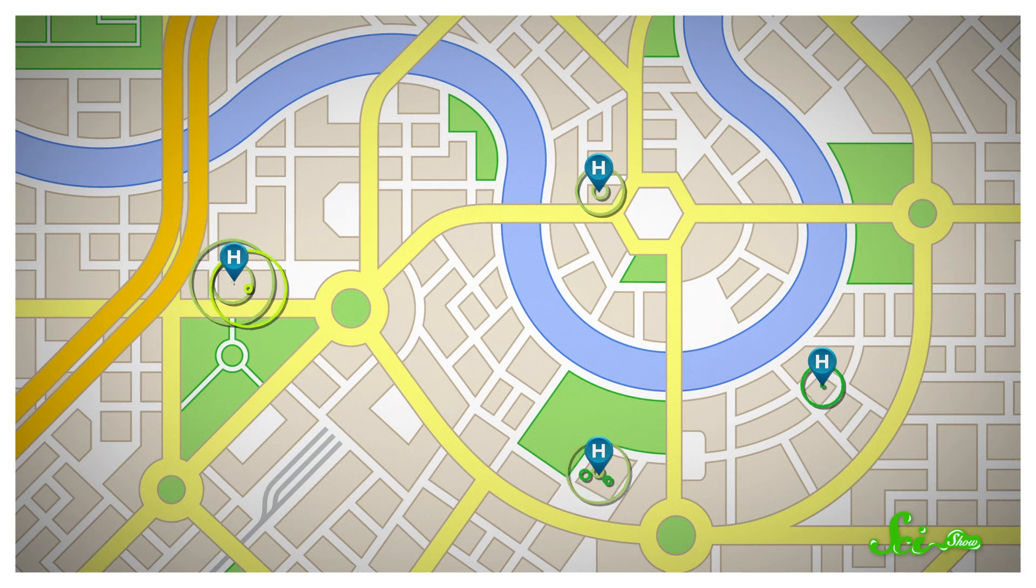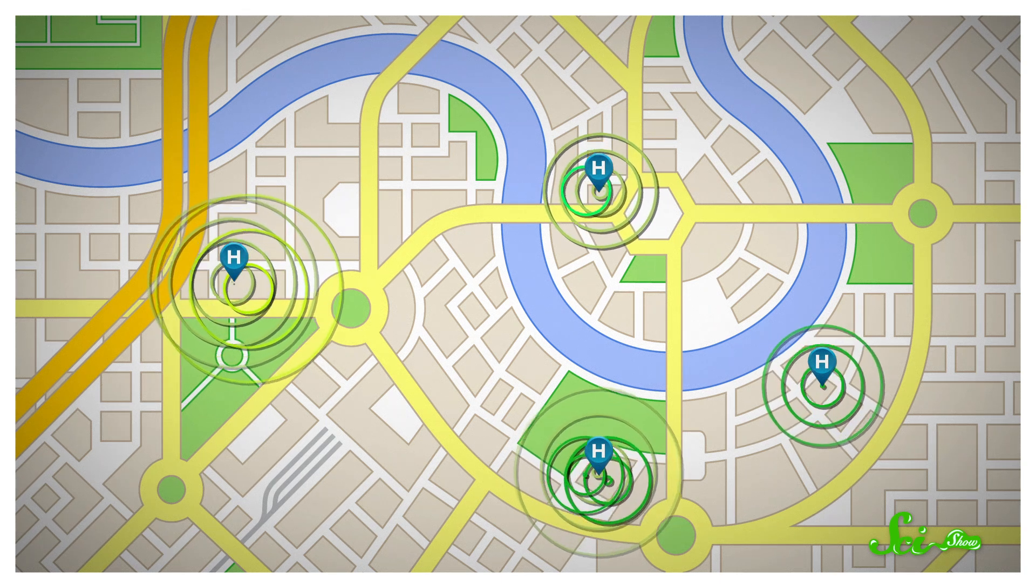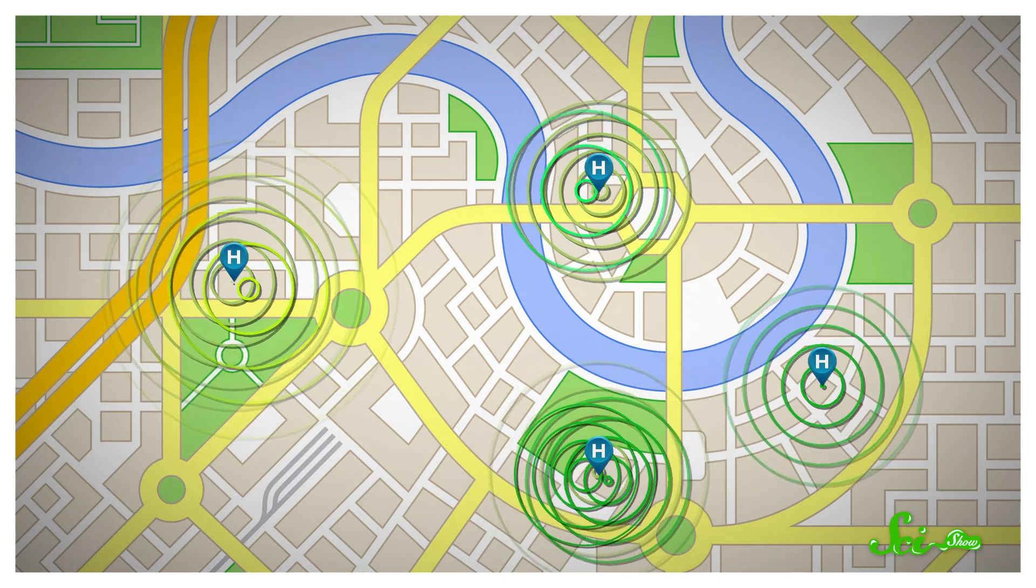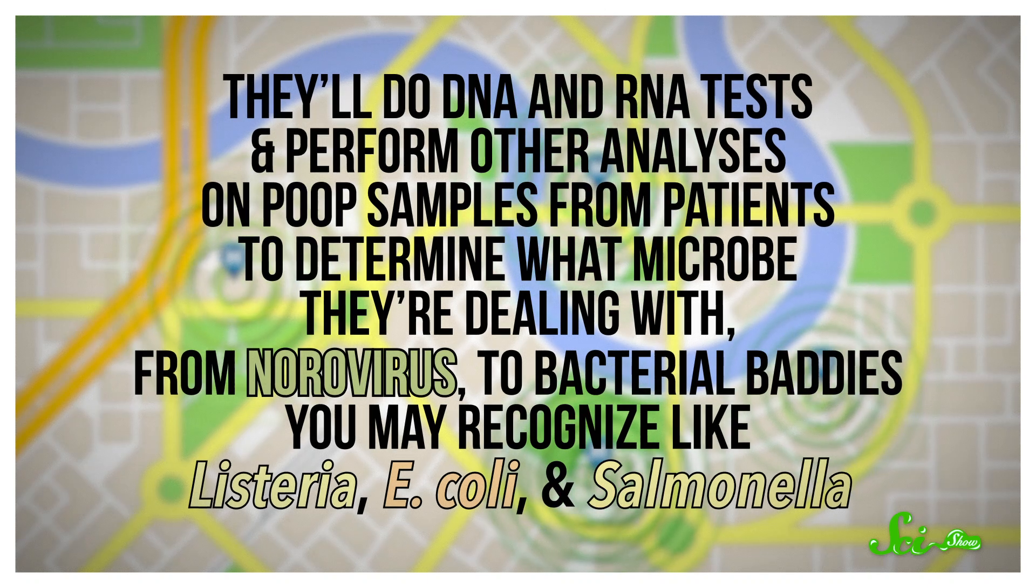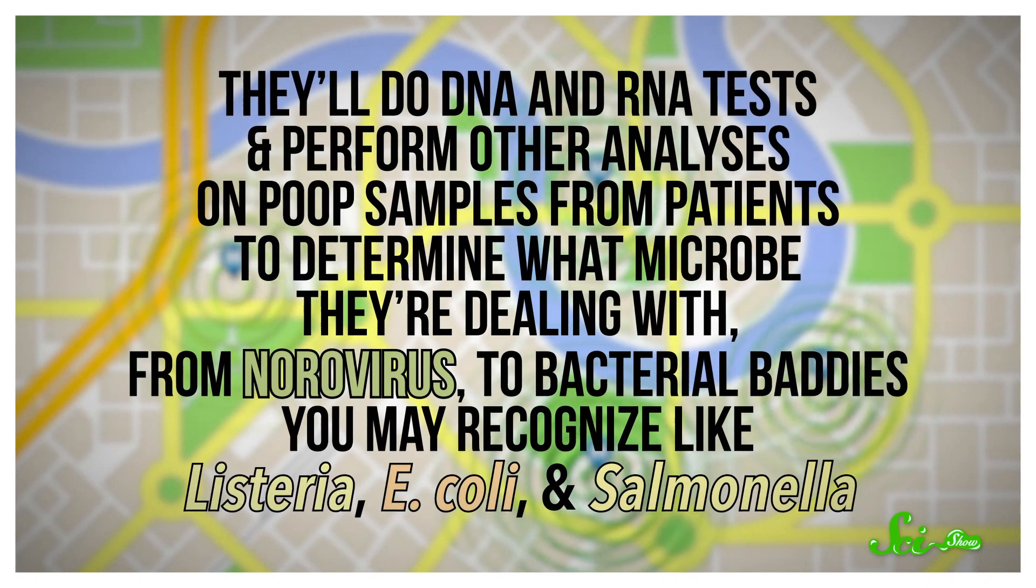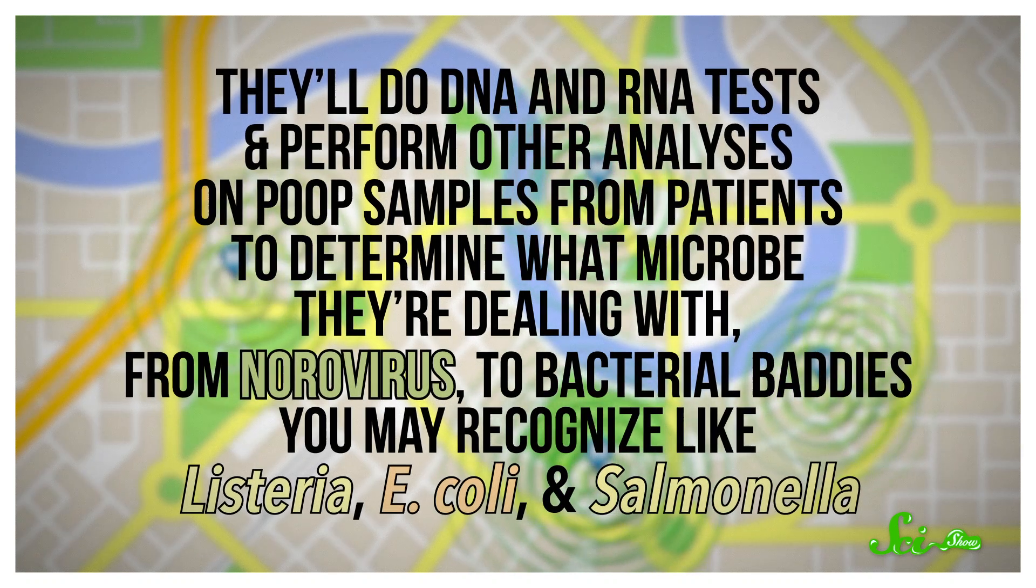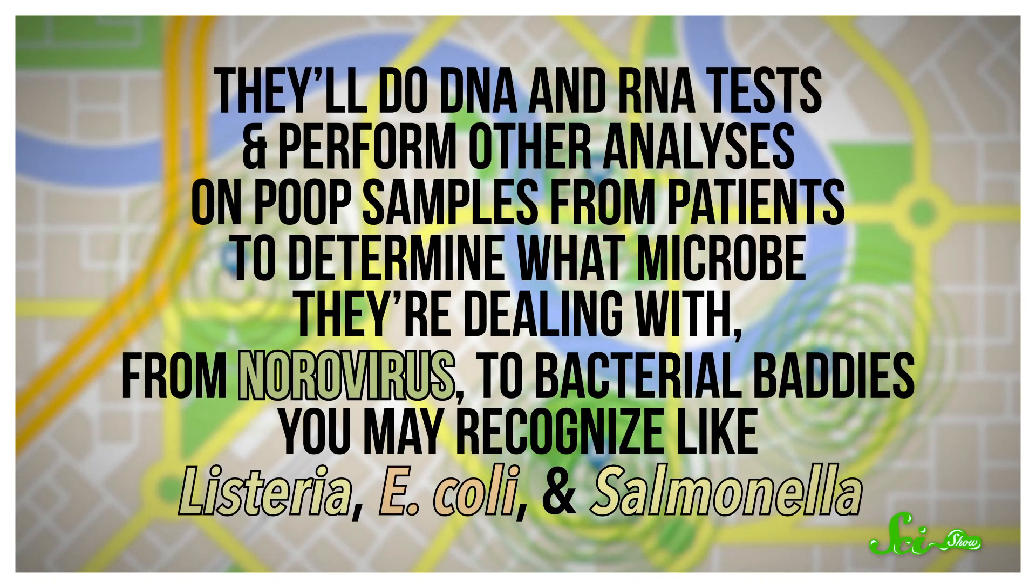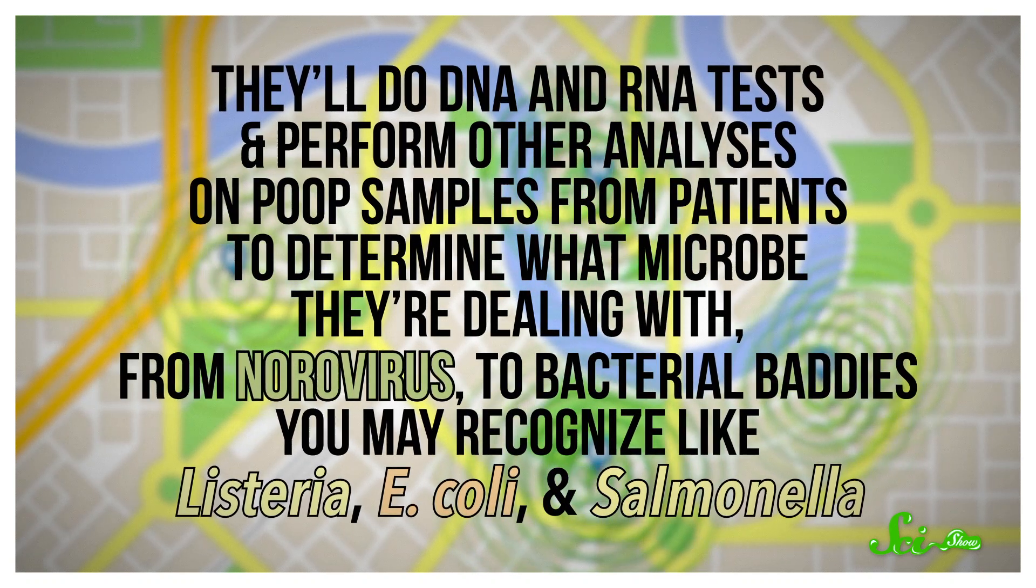That's basically how state health agencies and the CDC approach food poisoning outbreaks, too, just on a bigger scale. They have to try to trace the source so they can stop the spread of a microbe. These agencies monitor reports of illness from hospitals to look for weird spikes or clusters of foodborne illness. They'll do DNA and RNA tests and perform other analysis on poop samples from patients to determine what microbe they're dealing with, from norovirus to bacterial baddies you may recognize like Listeria, E. coli, and Salmonella.